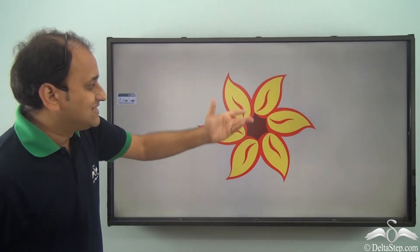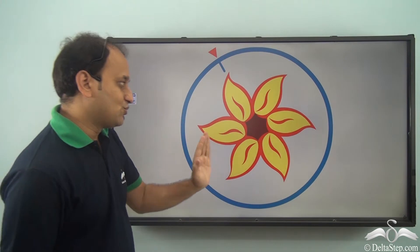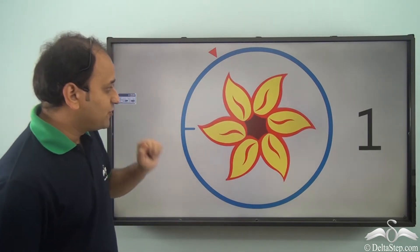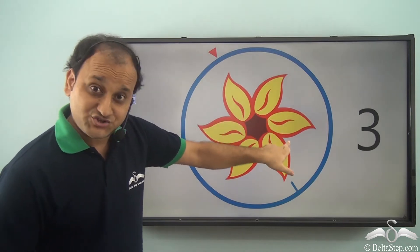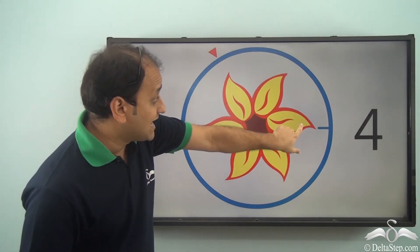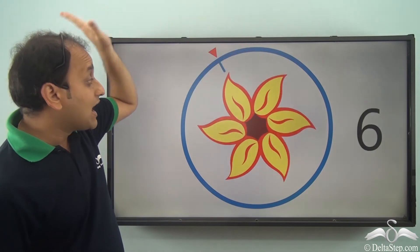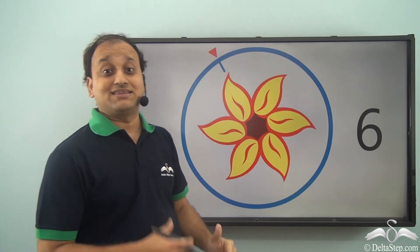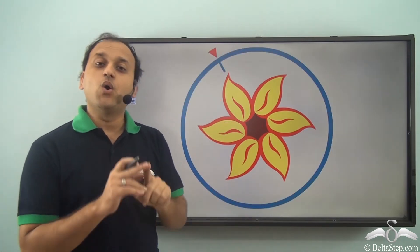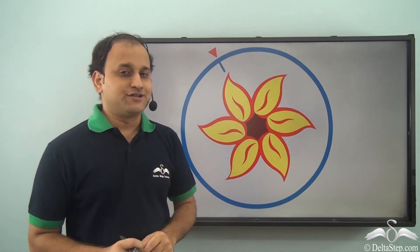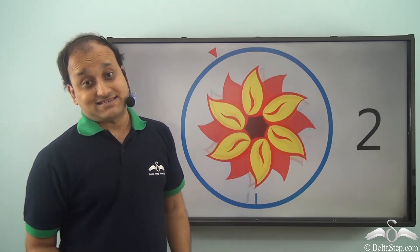Now what about this particular flower? It also shows rotational symmetry. If we rotate it one time, two times, three times, four times, five, and six times — it fits into itself six times before completing one full turn. So the order of rotational symmetry in this case will be six.